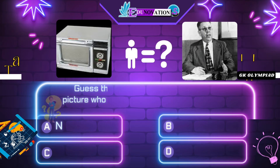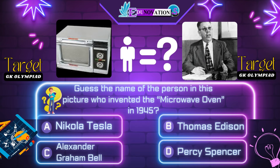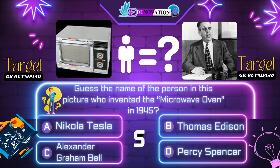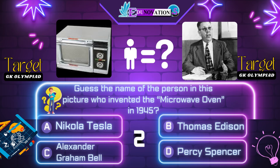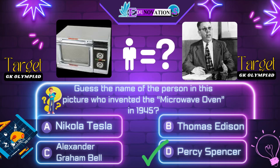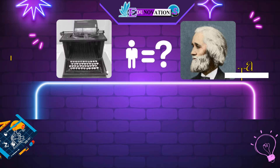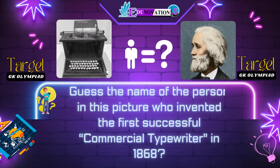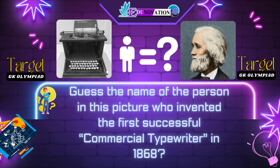Now next question. Guess the name of the person in this picture who invented the microwave oven in 1945. Your options are: A. Nikola Tesla, B. Thomas Edison, C. Alexander Goodel, D. Percy Spencer. Time's up. Correct answer is D. Percy Spencer.